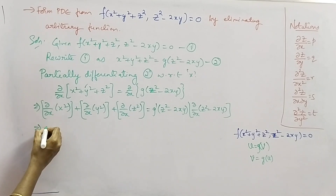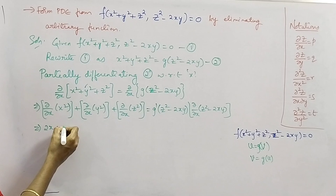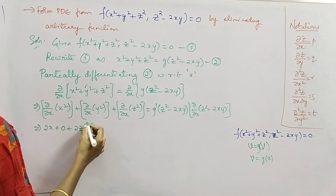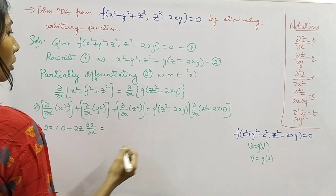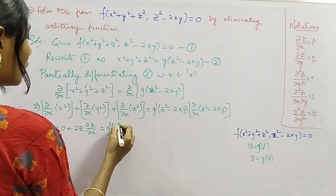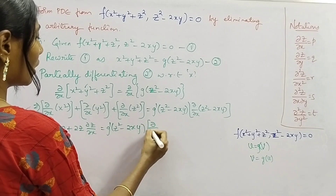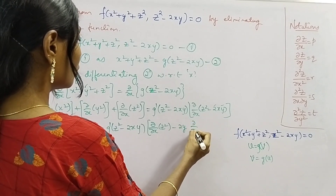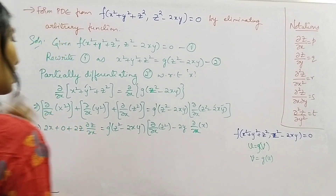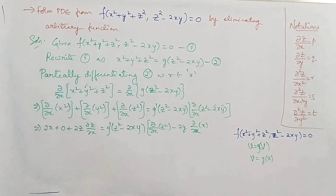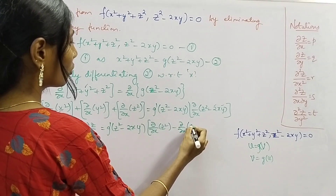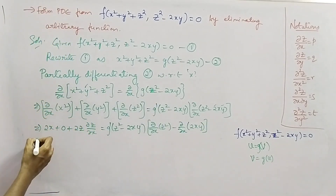Since we are differentiating with respect to x, y is treated as constant. The partial derivative of x² with respect to x is 2x, the partial derivative of y² with respect to x is 0, and the partial derivative of z² with respect to x is 2z · ∂z/∂x by the chain rule. The right-hand side gives g'(z² − 2xy) times the inner derivative ∂/∂x(z² − 2xy), where 2y is a constant so we write 2y · ∂x/∂x.